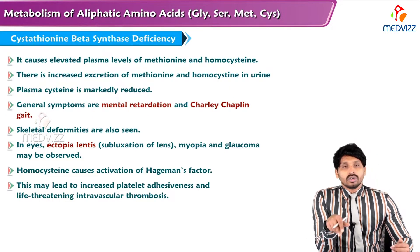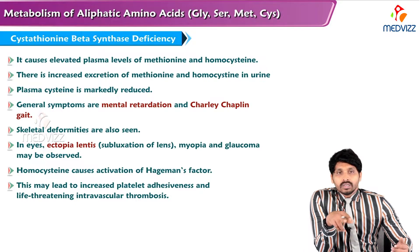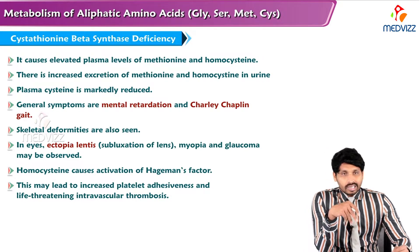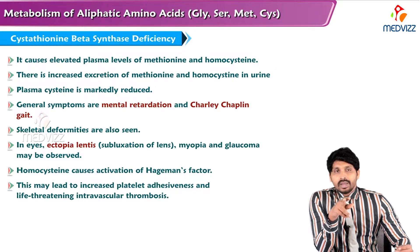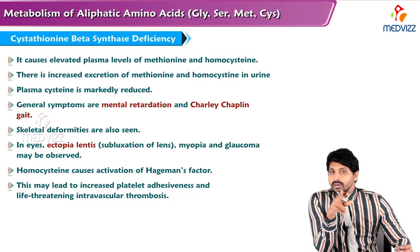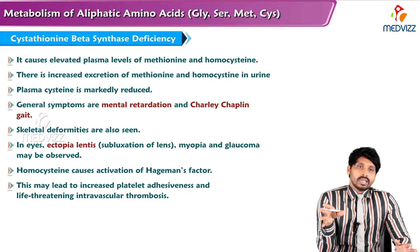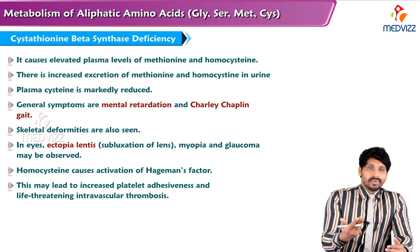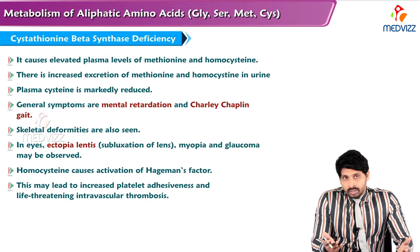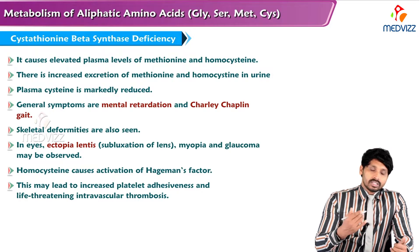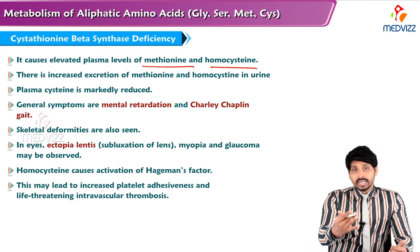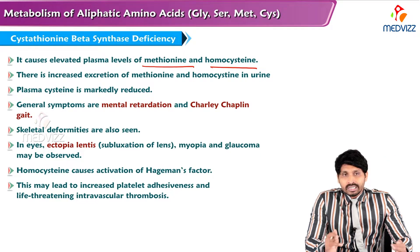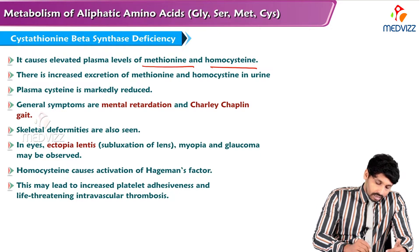Coming to another disorder of methionine metabolism: cystathionine beta synthase deficiency. This enzyme converts homocysteine with the help of serine to form cysteine. Because of the defect in this enzyme, homocysteine cannot be converted, so there are high levels of homocysteine. This elevates plasma levels of methionine and homocysteine. There is increased excretion of methionine and homocysteine in the urine, and plasma cysteine is markedly reduced.